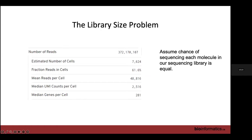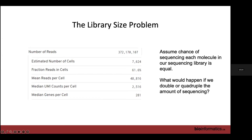Once we've done QC, we need to do normalization, and the reason is the library size problem. If we have a single-cell RNA-seq experiment where we've sequenced 372 million reads, we'll get a certain number of reads, UMIs, and genes detected per cell. But if we doubled or quadrupled the amount of sequencing, we would get more genes and more UMIs detected per cell. So the number of genes or reads we see per cell is determined by our choice of sequencing depth — it's not a fundamental property of our biological system.